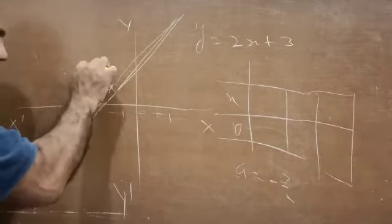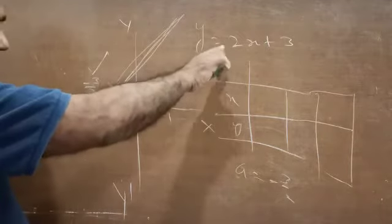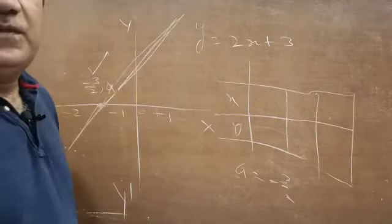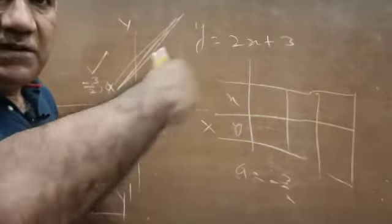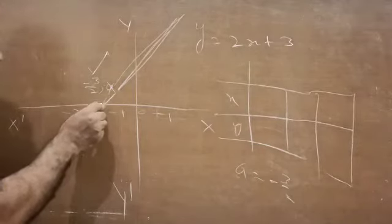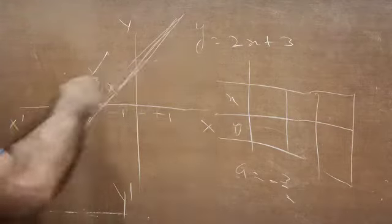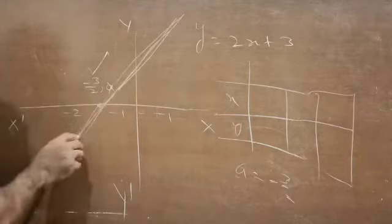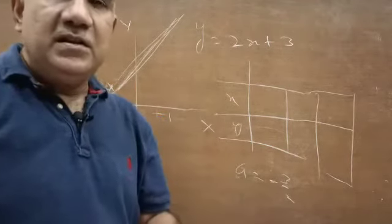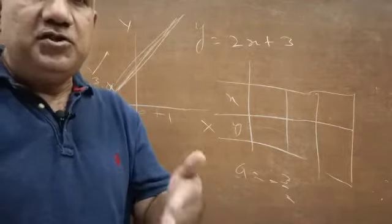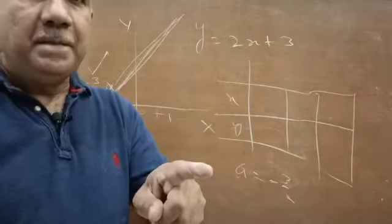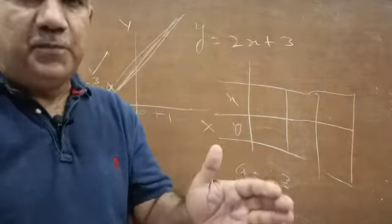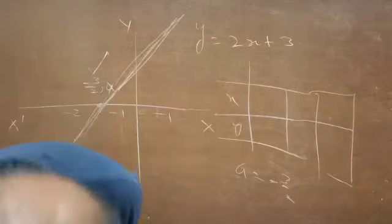So wherever the graph of y = 2x + 3 intersects the x-axis, the x-coordinate of that point is the zero. The x-coordinate of the point of intersection will be the zero. By looking at the graph you can find the zero — for this polynomial it will be -3/2, the point on the x-axis where the graph intersects.